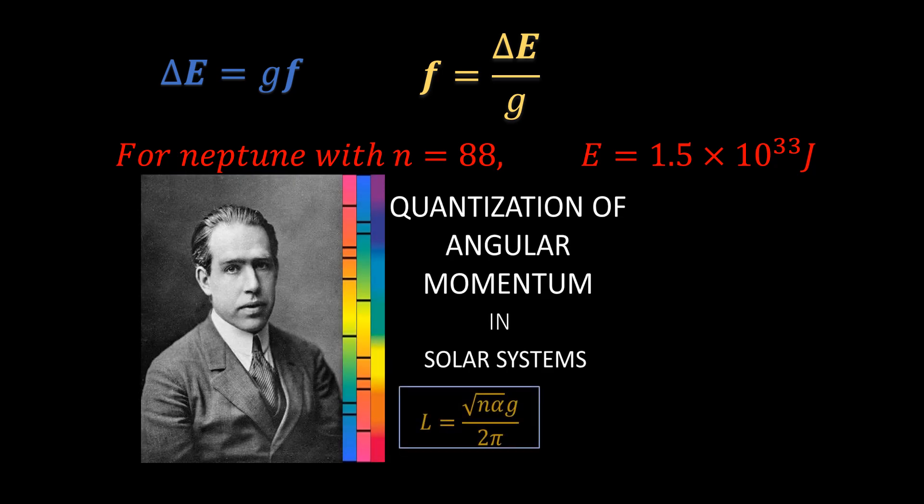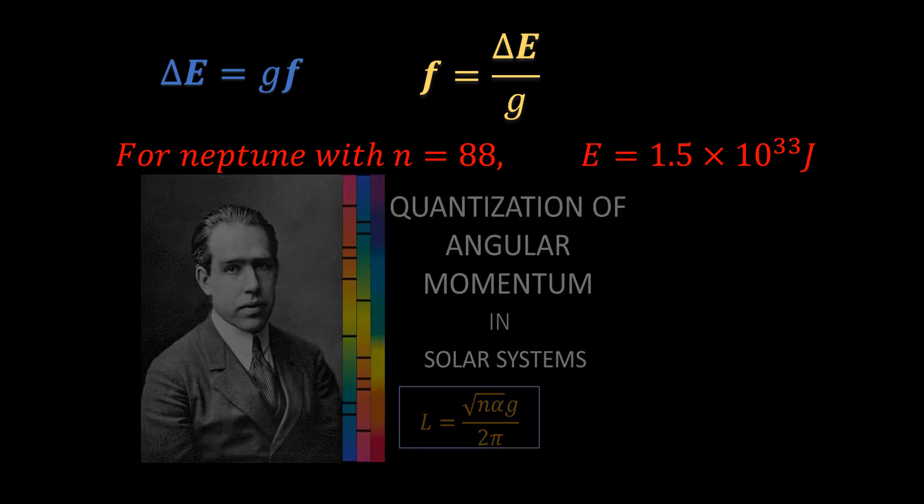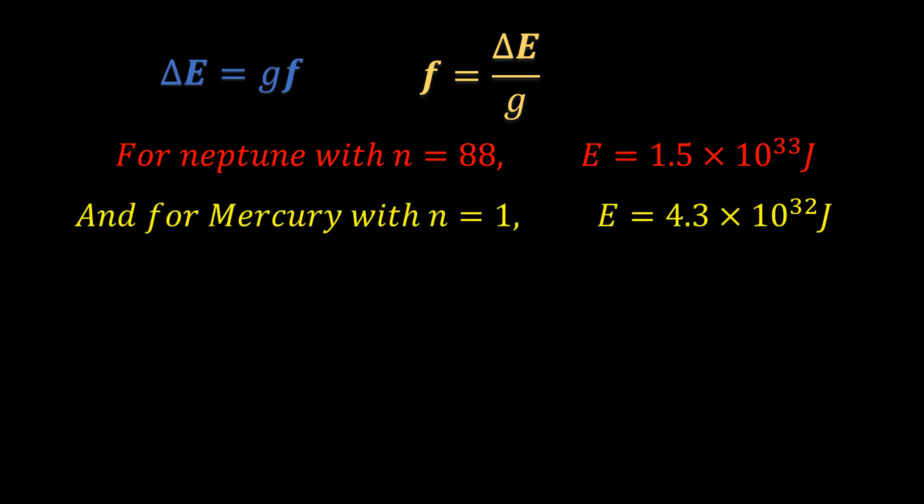Let us use this same approach for our equation to see what we get. So frequency is equal to the difference in energy over G. Let us take some data from our solar system. The energy of the orbit of Neptune with quantum number 88 is 1.5 exponential 33 joules. Refer to the video titled Quantization of angular momentum in solar systems to see how the quantum numbers for the planet are gotten. The energy of the orbit of Mercury is 4.3 exponential 32 joules. The difference in energy between these two levels is equal to 1.07 exponential 33 joules.